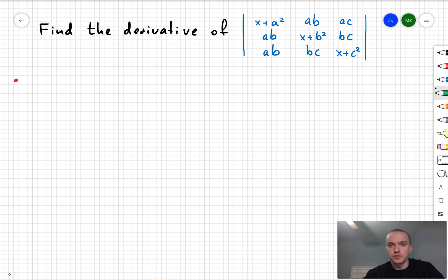In this problem, I want to find the derivative of the determinant. So first let's start with a regular determinant. I know that if I have a 2x2 matrix, the determinant of that matrix is going to be just AD minus BC.